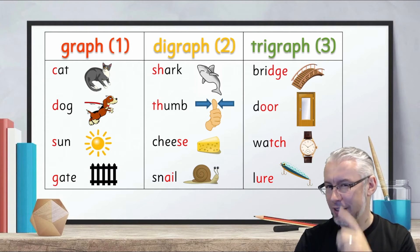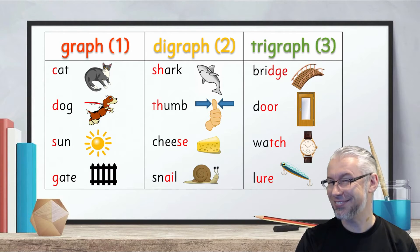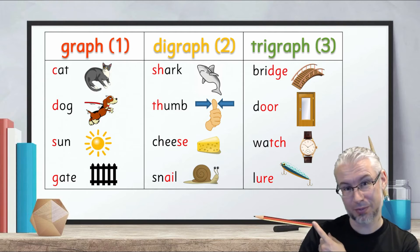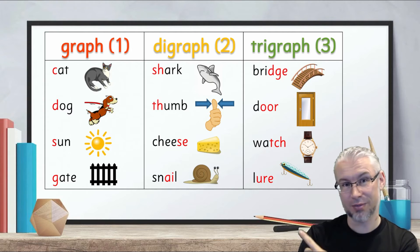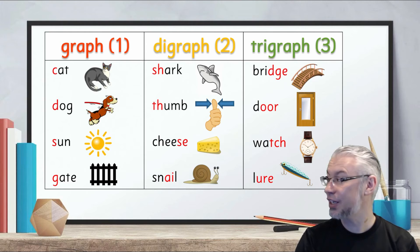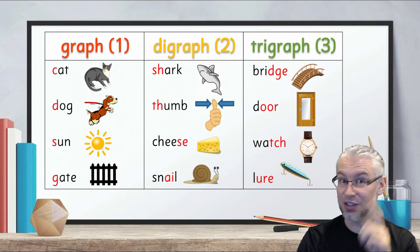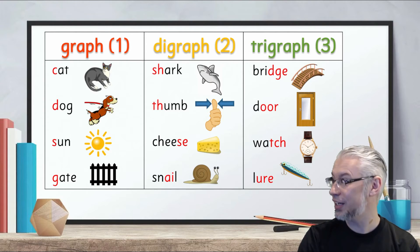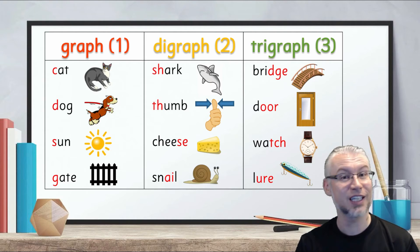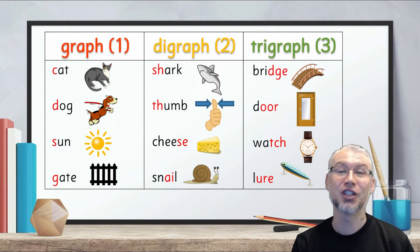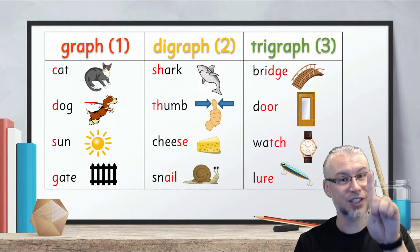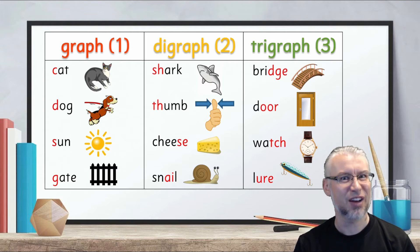That's right. You can see in the graph column all of the graphemes have one letter. K as in cat is the letter C. D as in dog is the letter D. S as in sun is the letter S. And G as in gate is the letter G. One-letter graphemes is a graph.